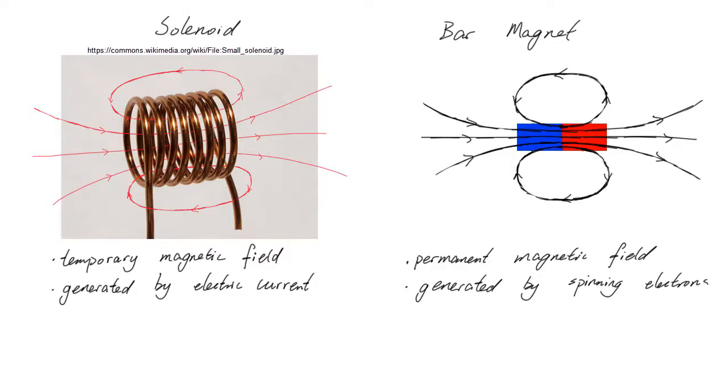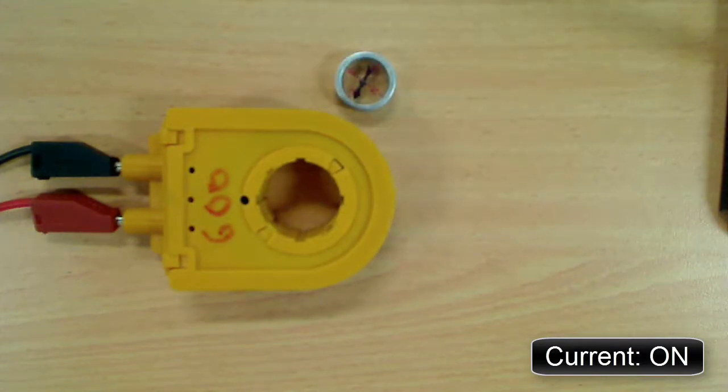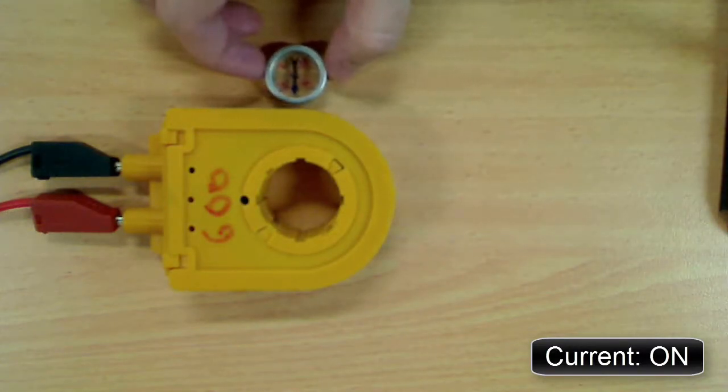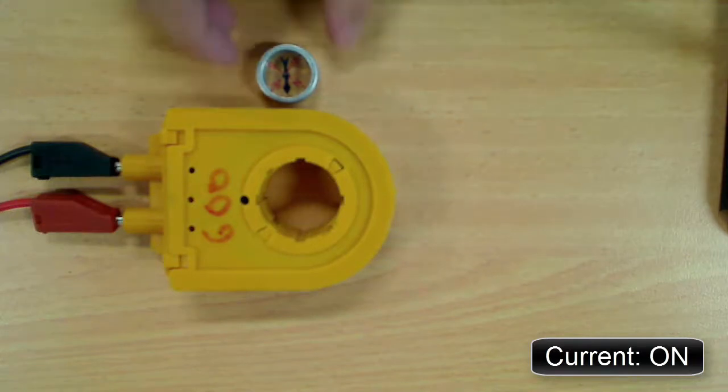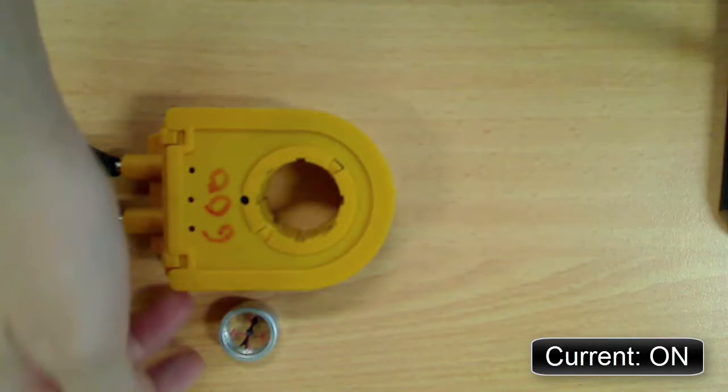Electromagnets is one such application. An electromagnet is exactly as its name describes, a magnet that is created by electricity. It's basically a solenoid. When you run a current through it, it acts like a magnet. When you turn off the current, it loses its magnetic field and stops acting like a magnet.